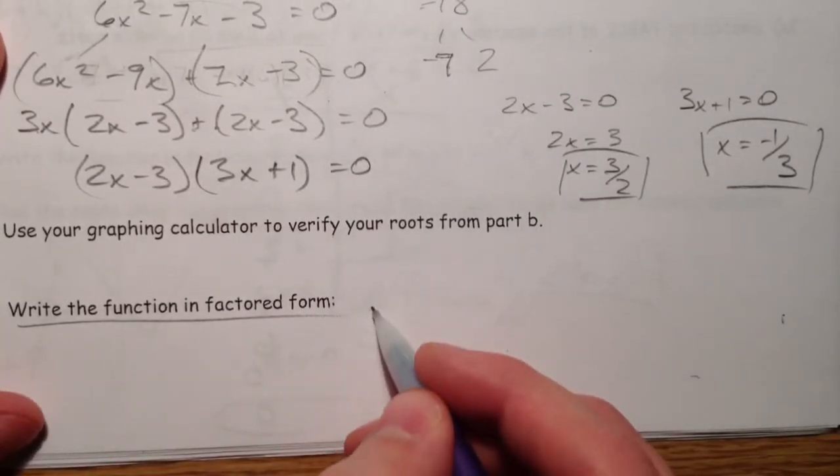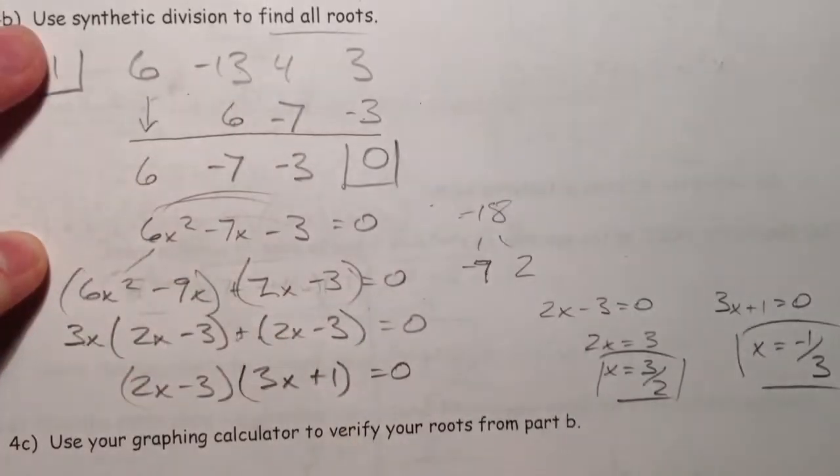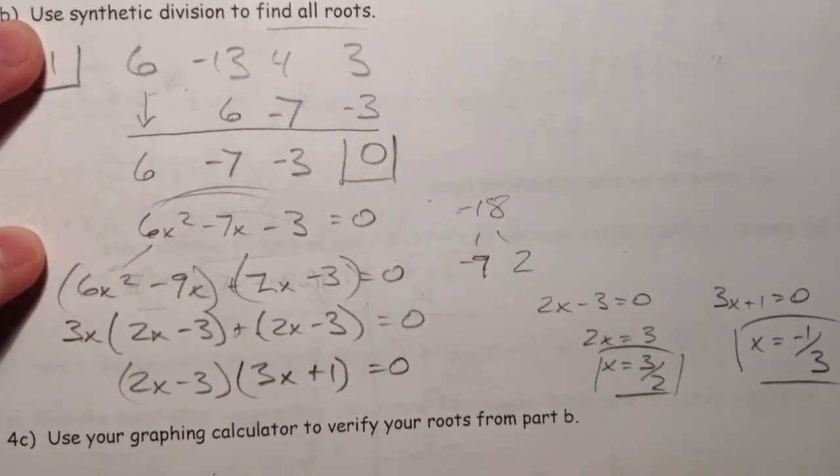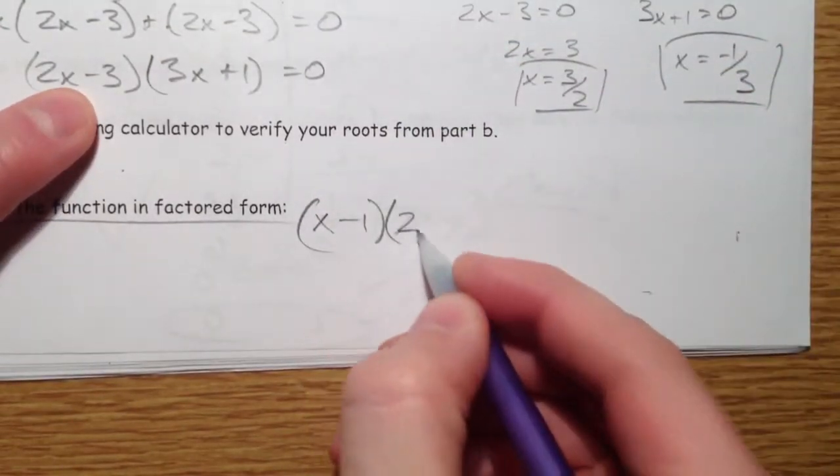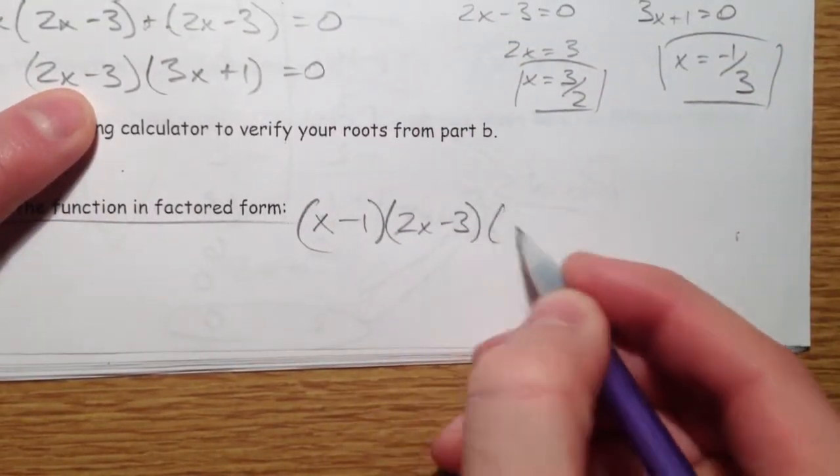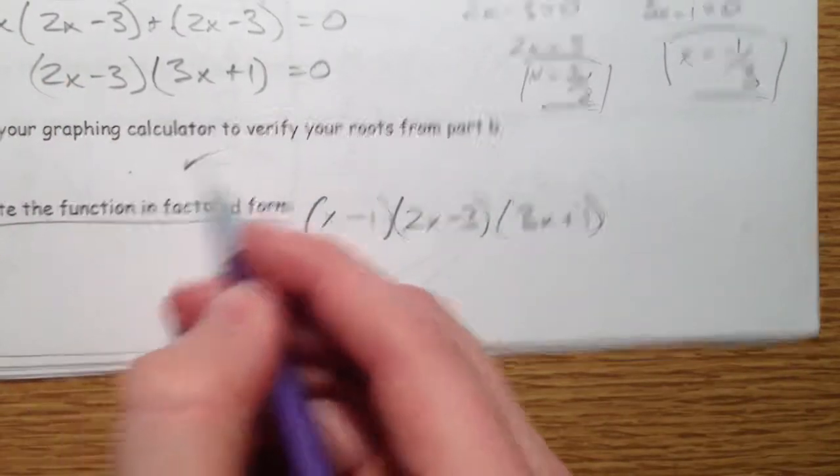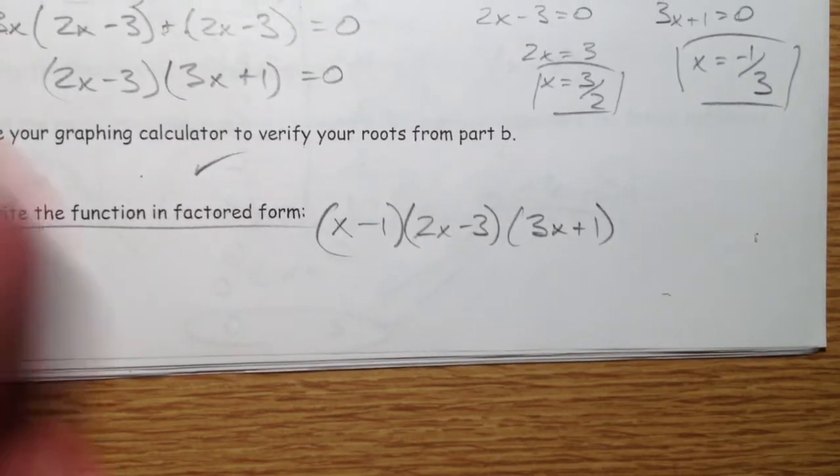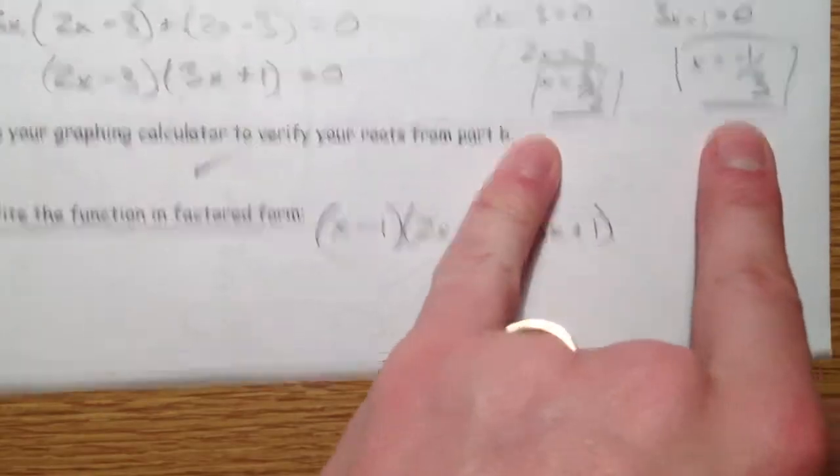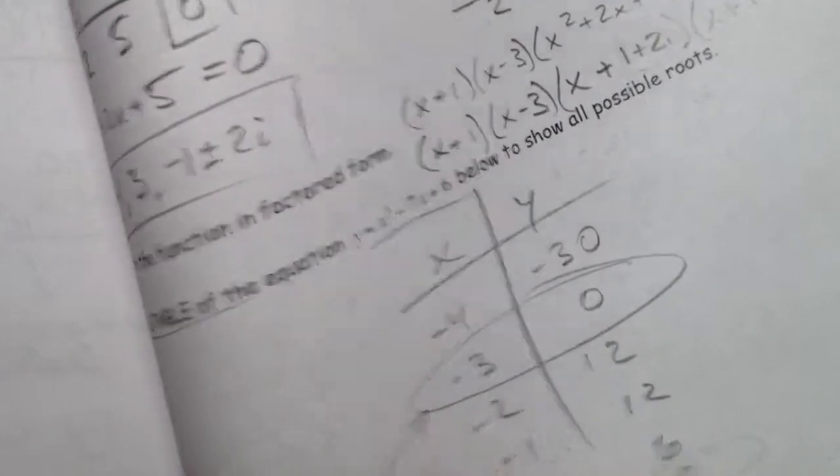So write the function in factored form. Well, we divided using the 1, so x minus 1 times our 2x minus 3 times our 3x plus 1. And we checked it. So there you have it, dividing using synthetic division to find maybe fractional roots or maybe even imaginary roots. Enjoy.